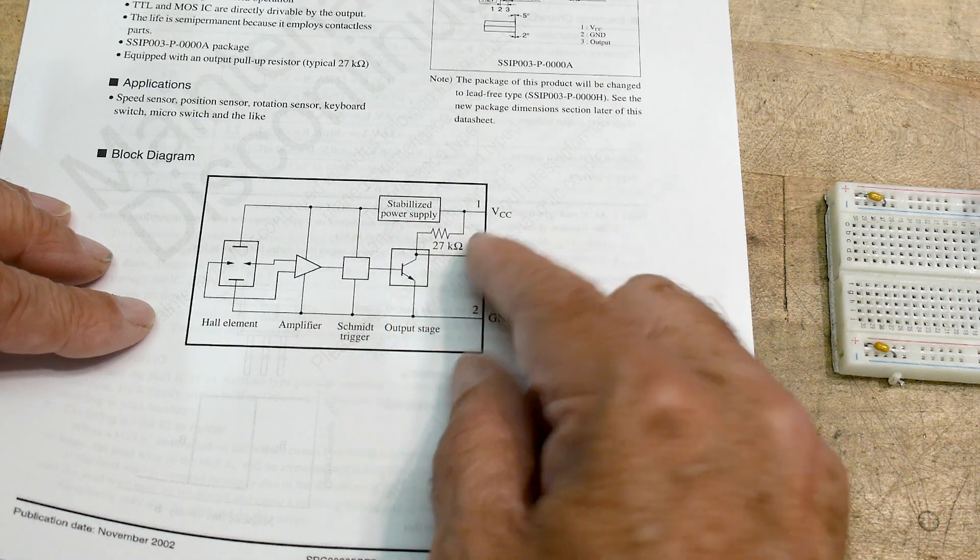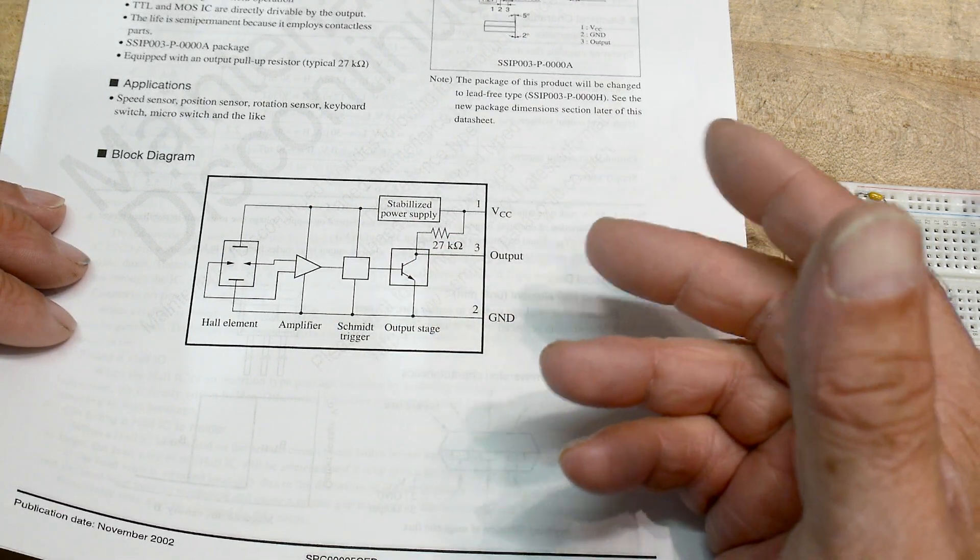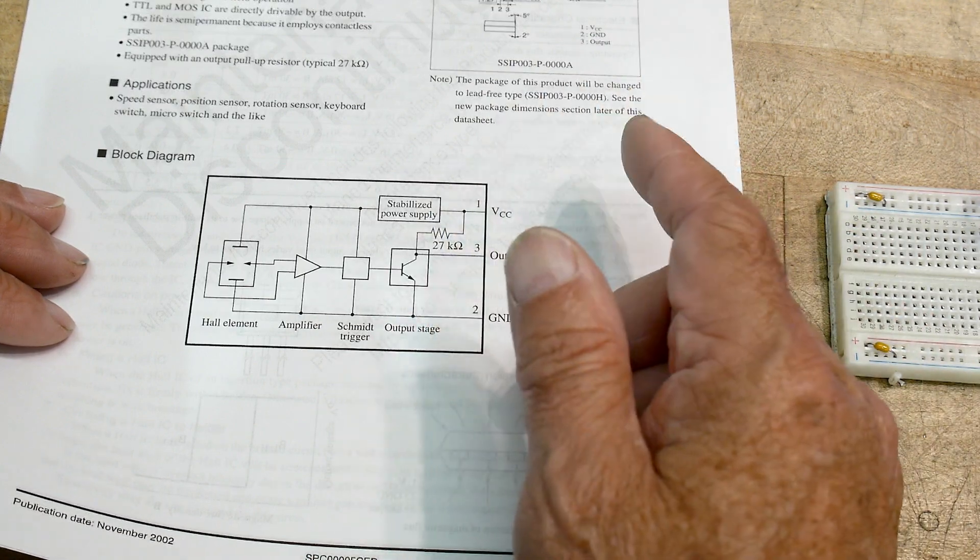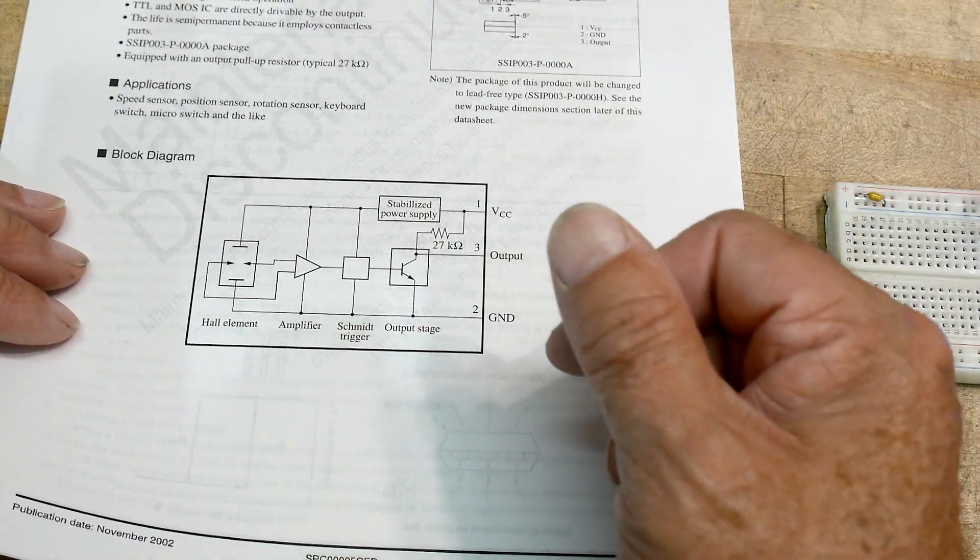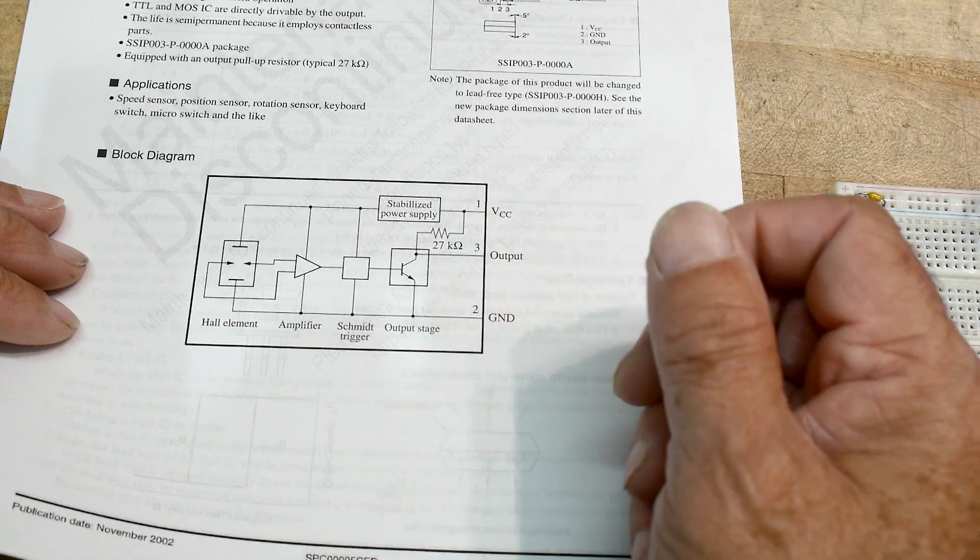It has a pull-up resistor included. So if you want to hook this up to a microcontroller, it already has the pull-up. Although microcontrollers always have their own internal pull-up as well. It has a pull-up, which is nice.